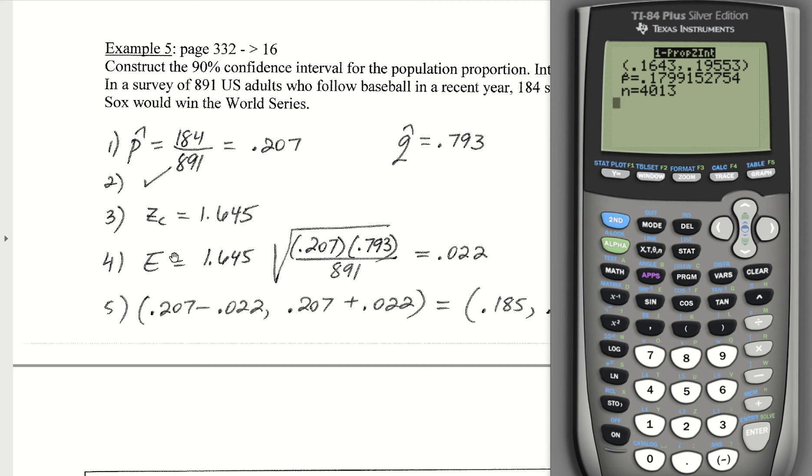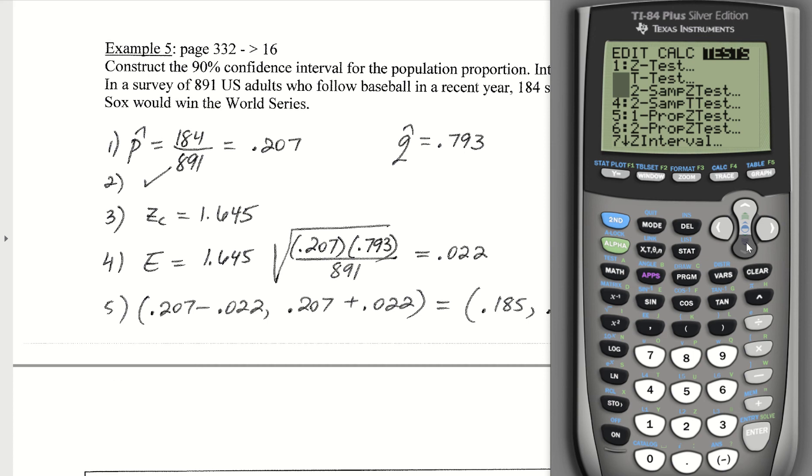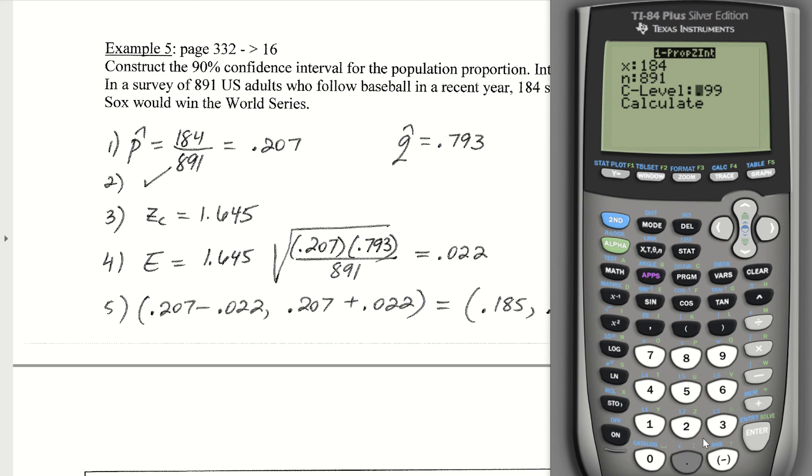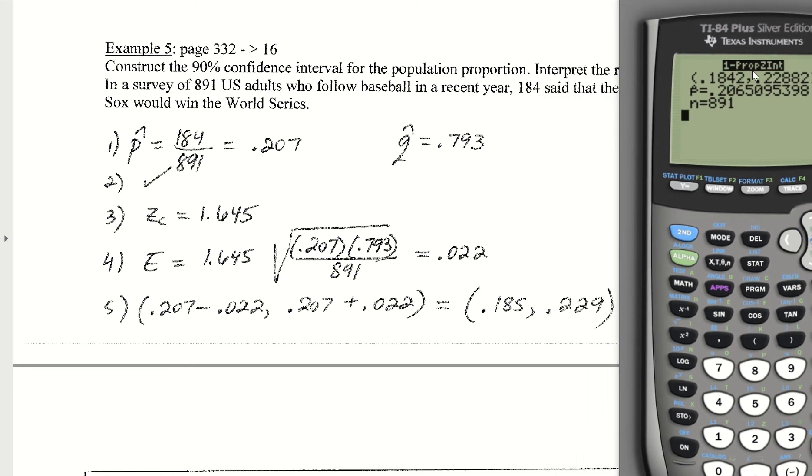You can either use the formula for E, or I'm going to do stat tests. That's one prop Z interval. This time our X value is 184. Our sample size is 891. And we want the 90% confidence interval, which would be 0.90. If we hit enter, that will give us a proportion of 0.184 to 0.229.